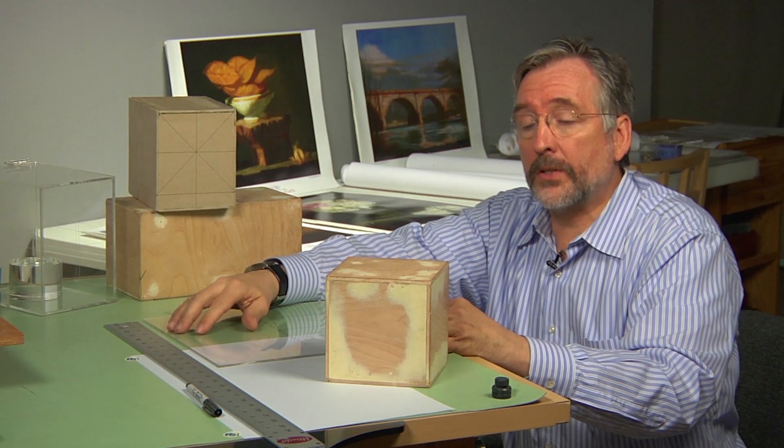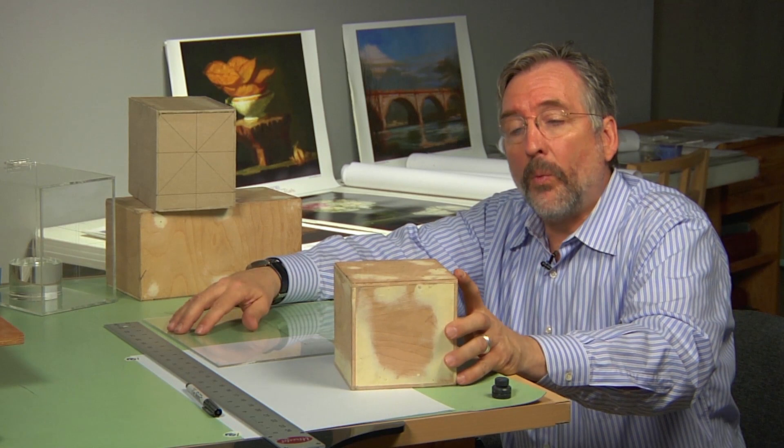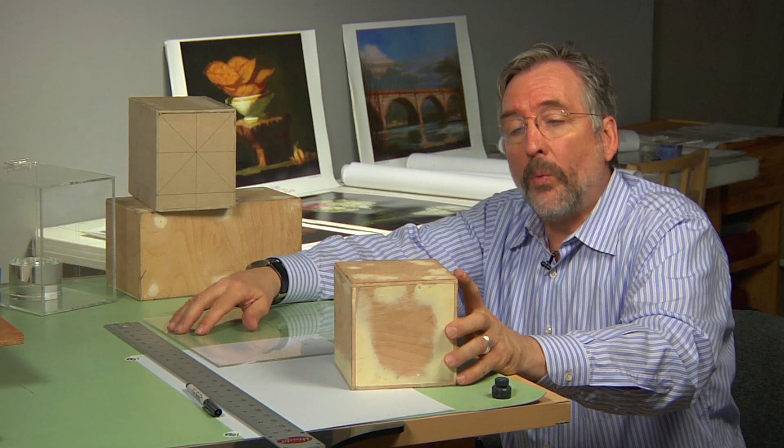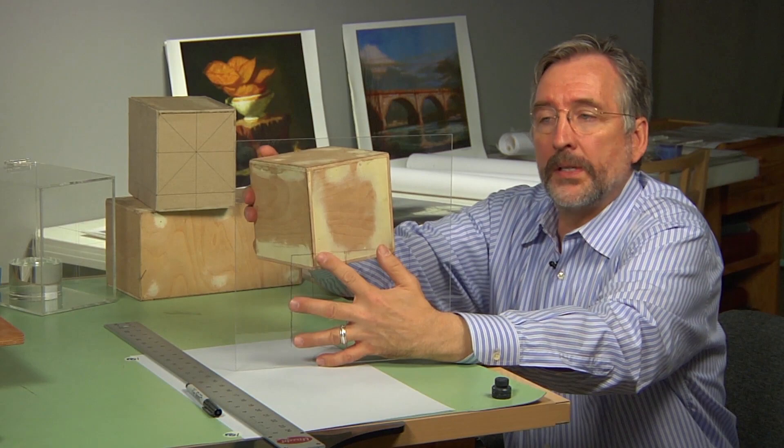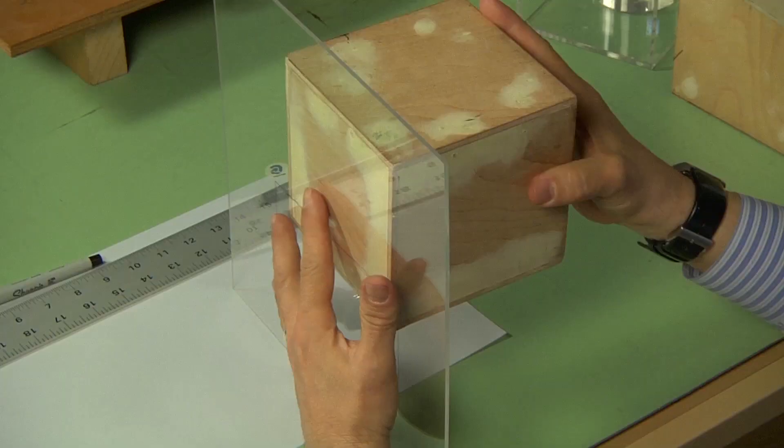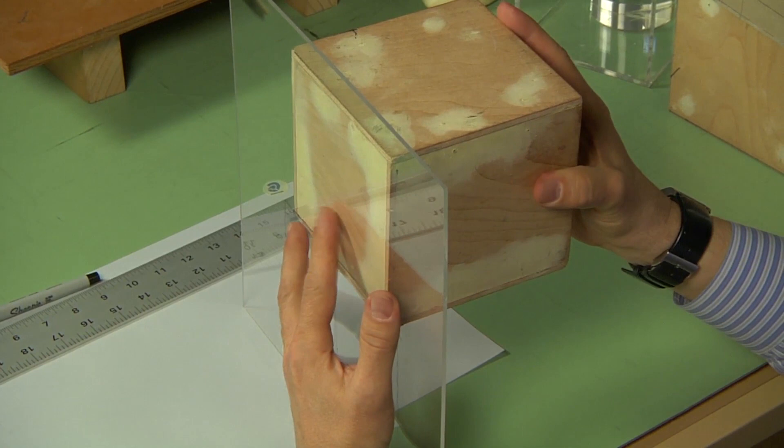When something is in one point perspective, we in perspective define its relationship to the picture plane. In other words, here's our picture plane, here's our object. If the face of the object is parallel, in other words it is not turned at any way like this, if it is parallel to the picture plane, it doesn't matter the distance, as long as the angular relationship is parallel, that is one point perspective.